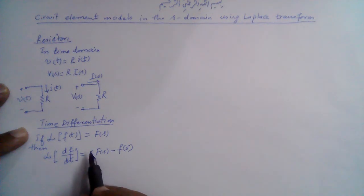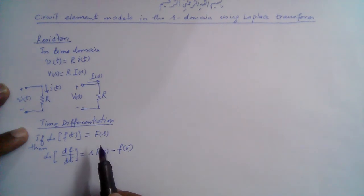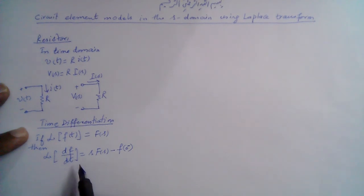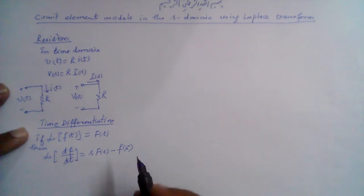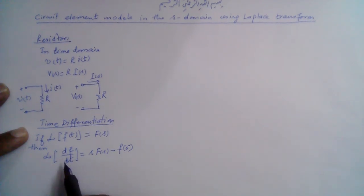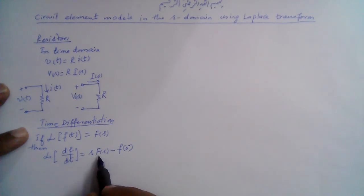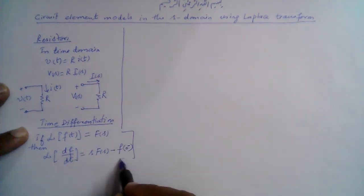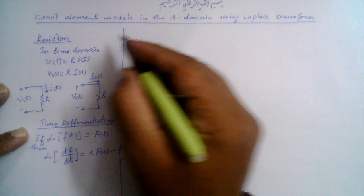The relationship between voltage and current for the inductor and capacitor in the time domain is based upon the first derivative. We are going to use this time differentiation property to express the circuit element models in the frequency or S domain. Note that the differentiation process is reduced to simple multiplication — s multiplied by F(s) — so a calculus operation is reduced to an algebraic operation.